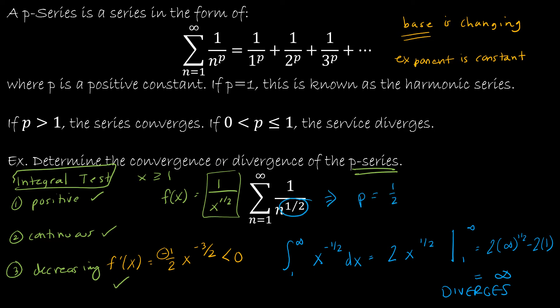This is a p series where I have the p value of 1 half. So if p is 1 half, then using a p series, I can say that 0 is less than p is less than or equal to 1. So this diverges by the p series test or by the p series because it's not a test, it's just a series.